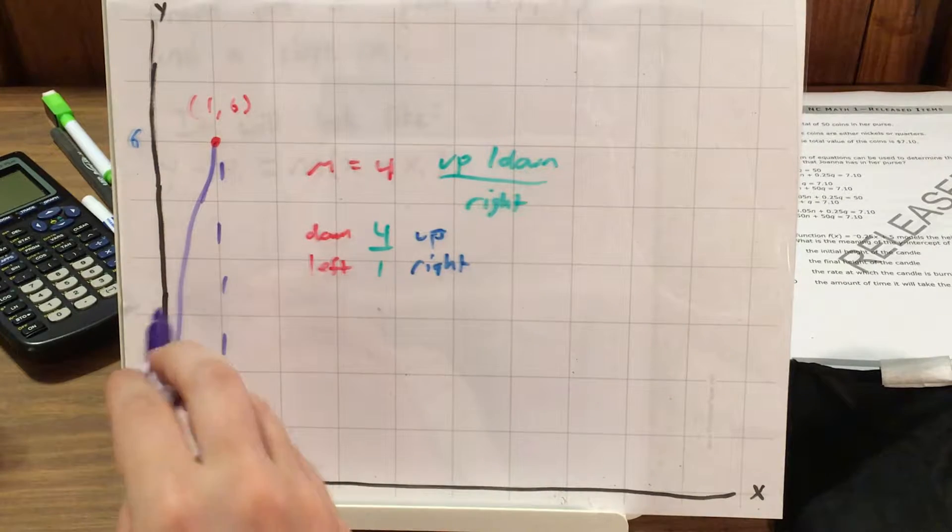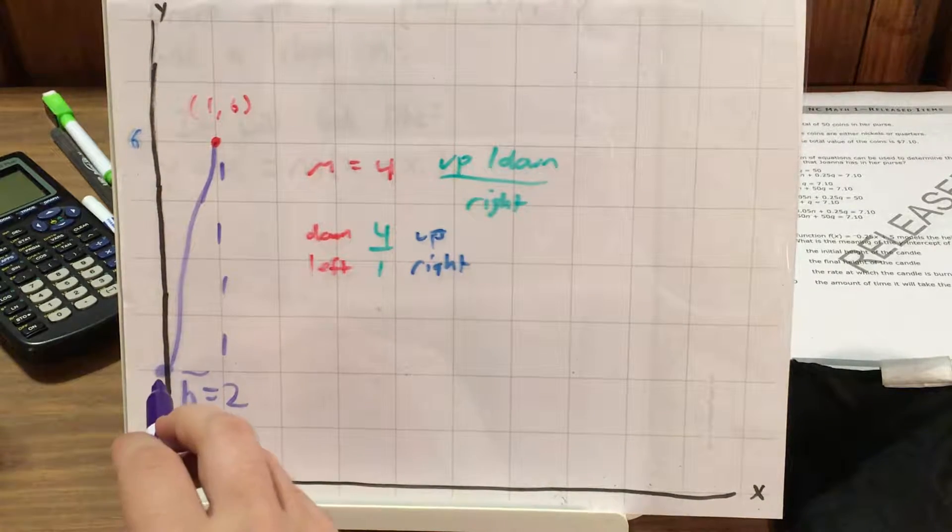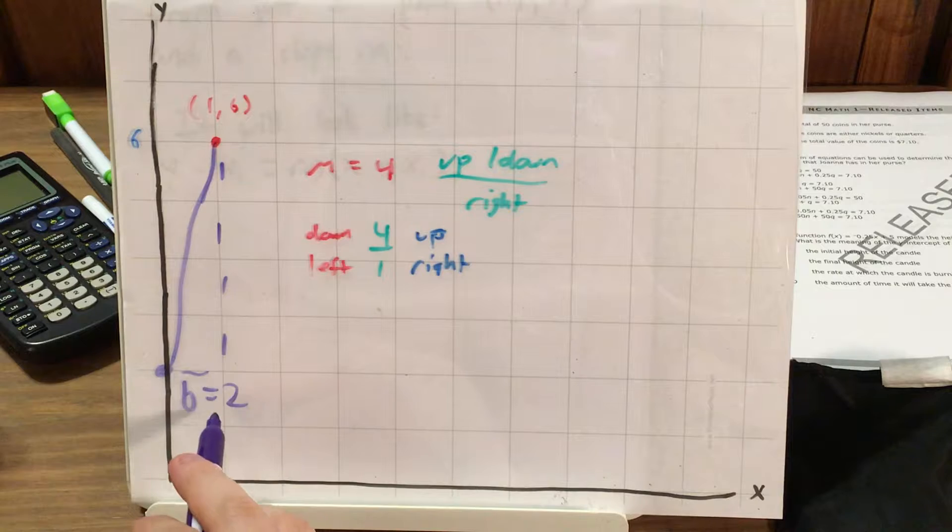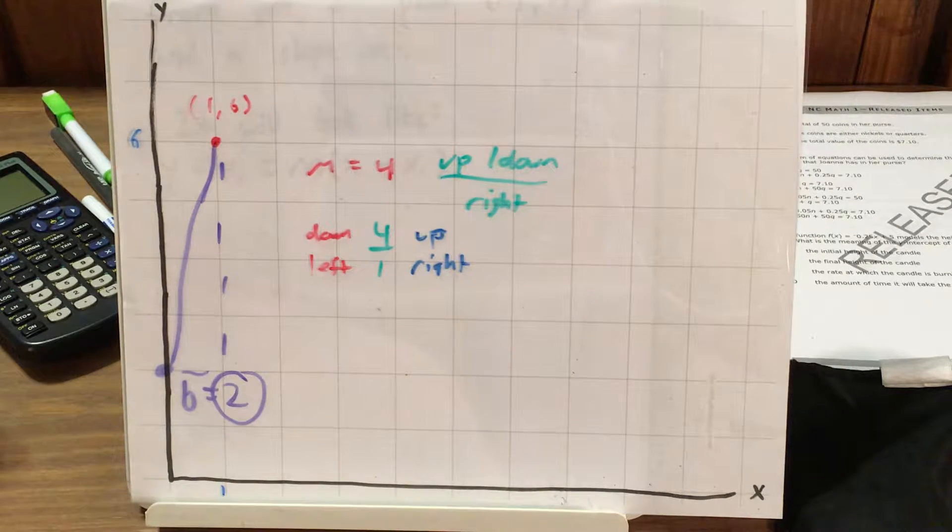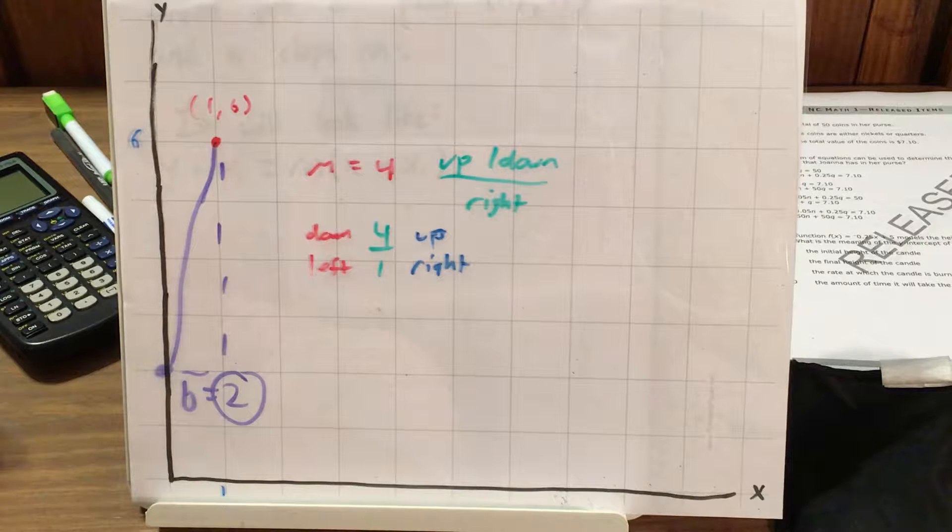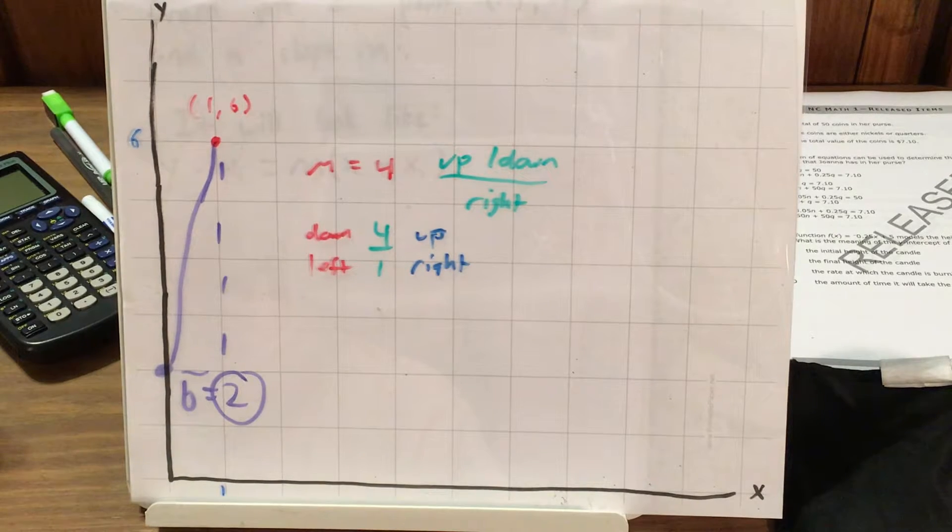But the y-intercept, according to what I've just done, the place where this line is going to hit the y-axis is actually going to be right on the number 2. Now, I am going to get to this idea that our y-intercept is 2 in another way, using what's called point-slope form.